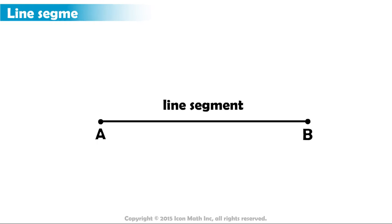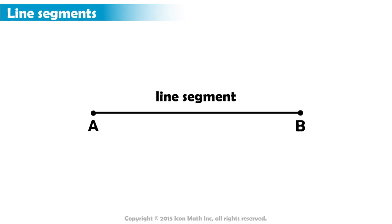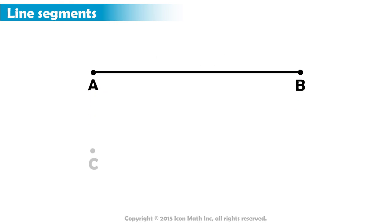Here we have a line segment that connects between the two points A and B. If we have another two points, C and D, and we connect between them, we will have another line segment.